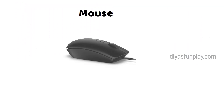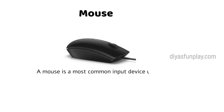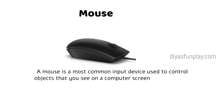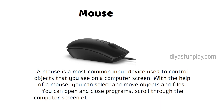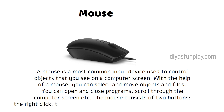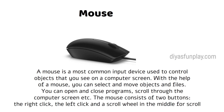Mouse. A mouse is a most common input device used to control objects that you see on a computer screen. With the help of a mouse, you can select and move objects and files. You can open and close programs, scroll through the computer screen, etc. The mouse consists of two buttons — the right click, the left click — and a scroll wheel in the middle for scrolling.